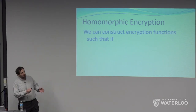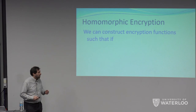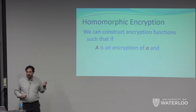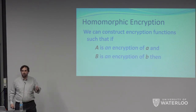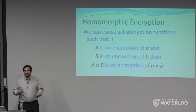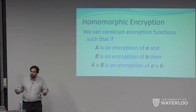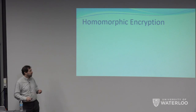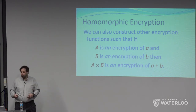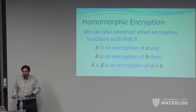There are some encryption methods that allow you to compute directly on data — here are two encryptions of things, put them together in some way, and get a semantically meaningful encryption of a third thing. The principal tool for this is homomorphic encryption. With homomorphic encryption, you can build encryption functions that have certain properties. If capital A is an encryption of little a, and capital B is an encryption of little b, you can have the system have the property that if you multiply the two encryptions, you get an encryption of the product of the plaintexts.